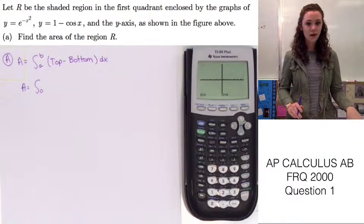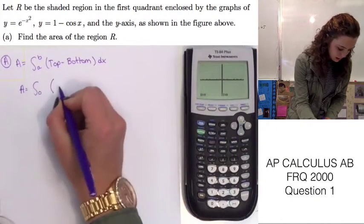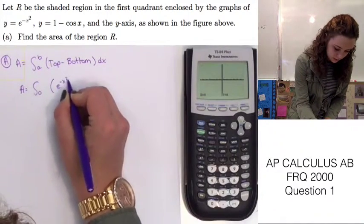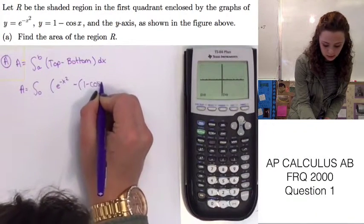We also know by looking at the graph that they gave us that the top function is going to be e to the negative x squared and the bottom function will be one minus cosine x.